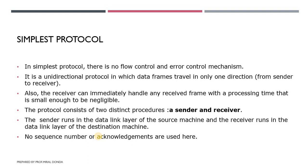It is a unidirectional protocol in which data frames travel in only one direction — from sender to receiver only. The receiver does not send any data back to the sender. Also, the receiver can immediately handle any received frame with a processing time small enough to be negligible, so the receiver accepts any data frame with little processing time.